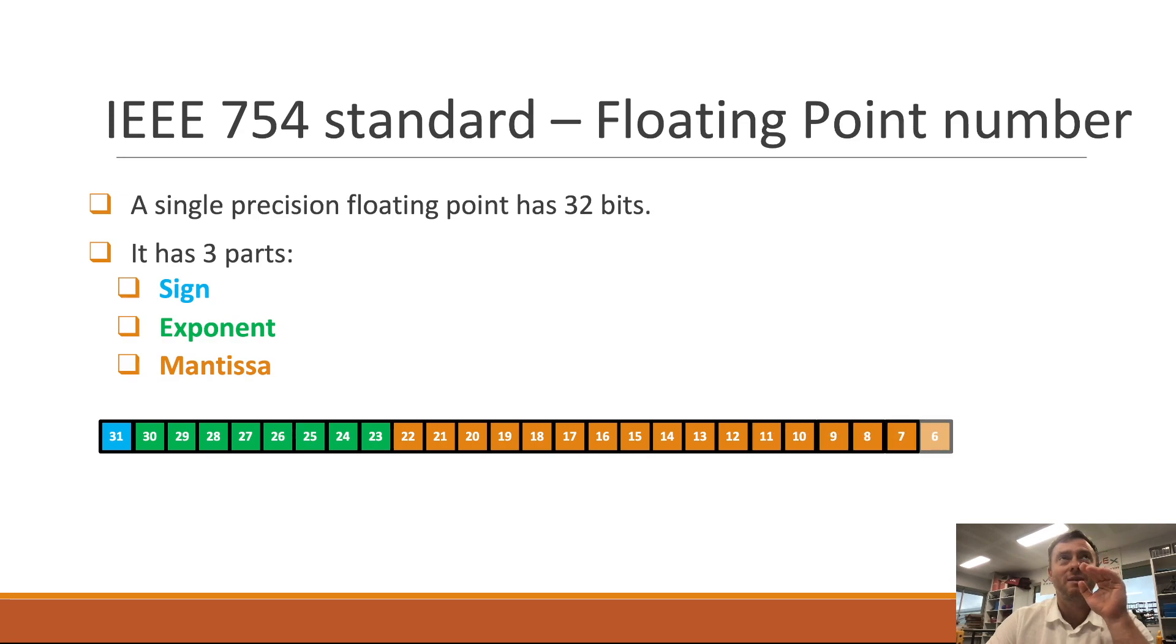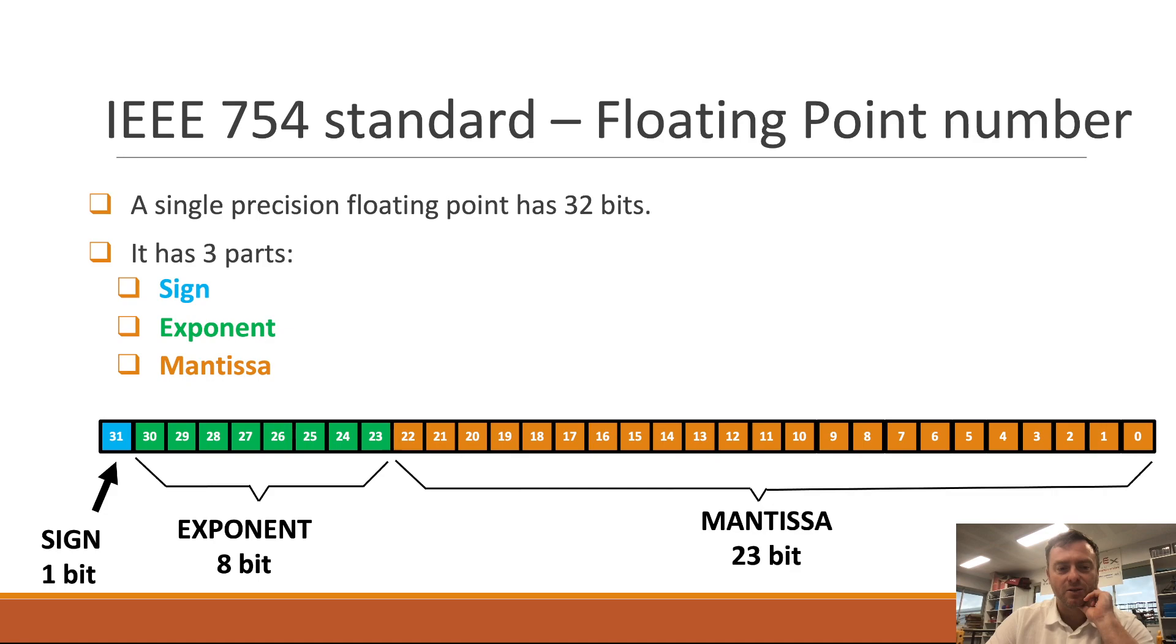So you basically can go from 127 down to negative 128, and then you have the Mantissa, which is the decimal point afterwards. It's for the next 23 bits. Those 32-bit numbers, so it's also another way of saying it's four bytes, come together to make the floating point number.